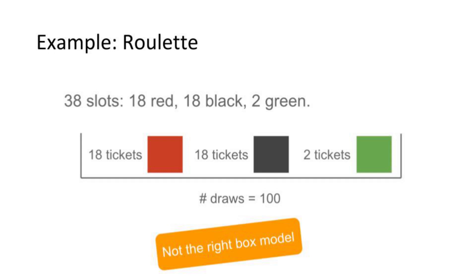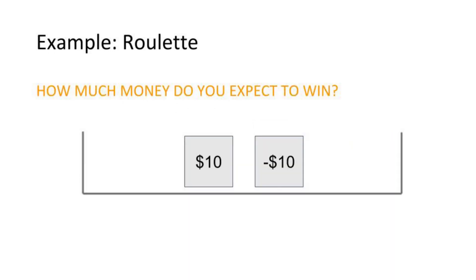I want to know how much money I expect to win. So in this box, I should put a $10 ticket and a minus $10 ticket with their own separate probabilities.